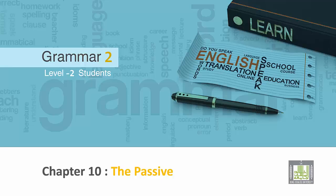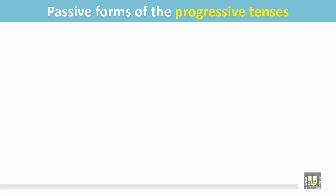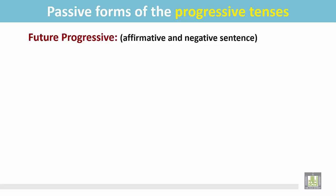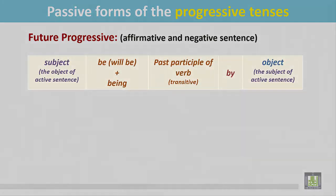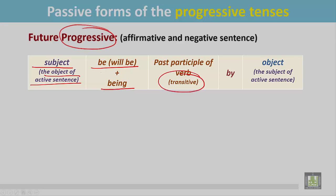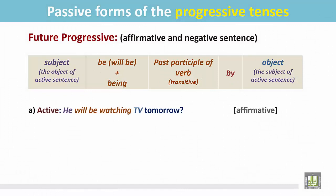Grammar 2 for Level 2 students, Chapter 10: the passive — passive forms of the progressive tenses, future progressive, affirmative and negative. The sentence begins with the subject, which is the object of the active sentence. Then the be verb 'will be,' and for the progressive tense 'being,' and the transitive verb is in the past participle form, followed by the preposition, then the object, which is the subject of the active sentence.